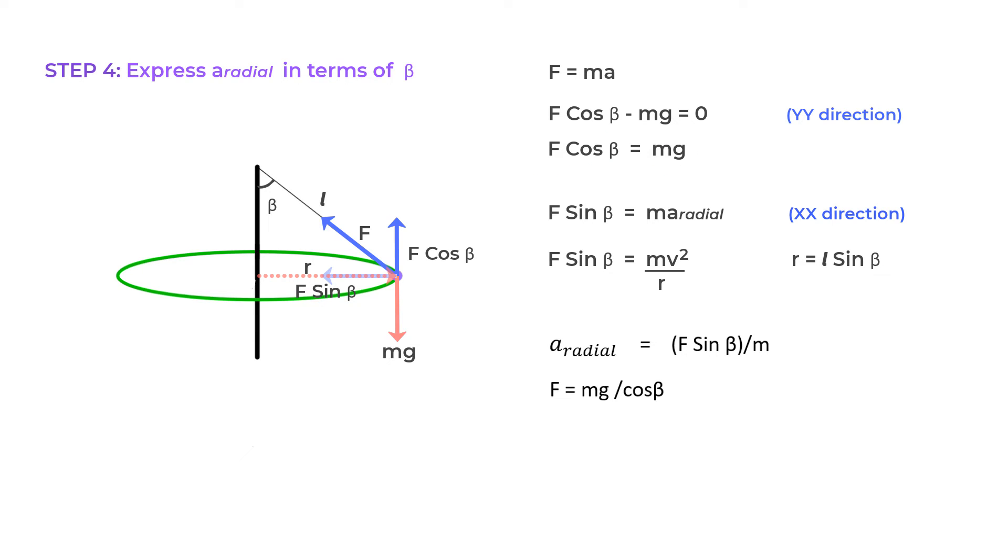And if we substitute this expression for F here, what we get is A_radial equals G tan beta. And in final step five, we will find the time period T of oscillation.